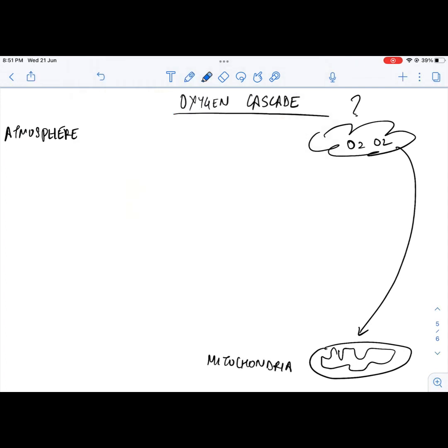Oxygen flows from areas with high partial pressure of oxygen, also known as oxygen tension, to areas of lower partial pressures. To understand this cascade,